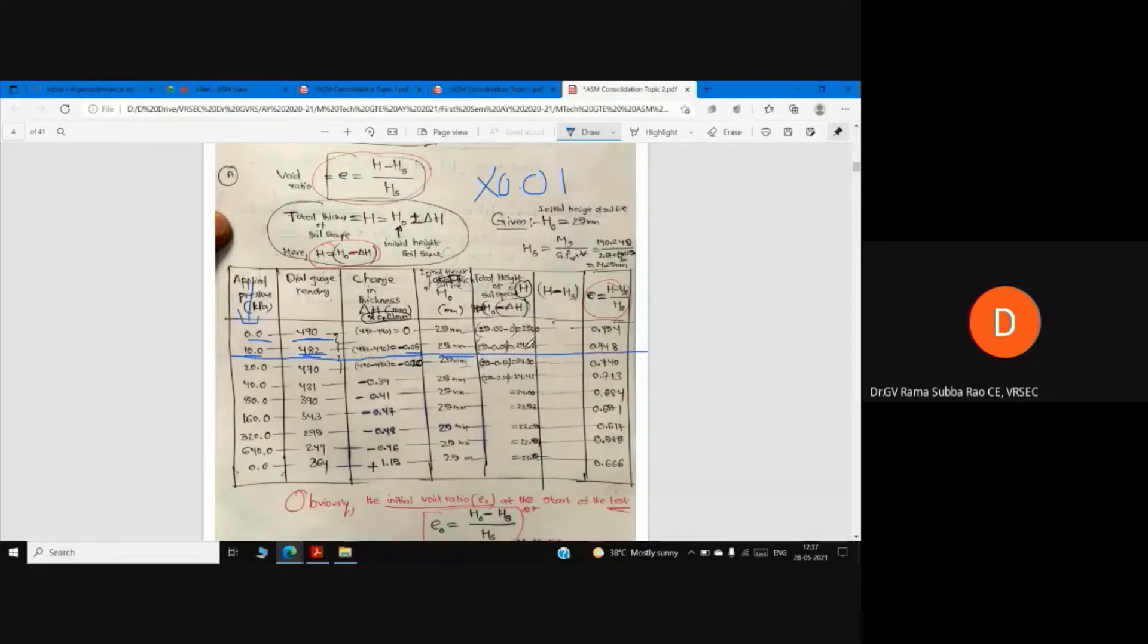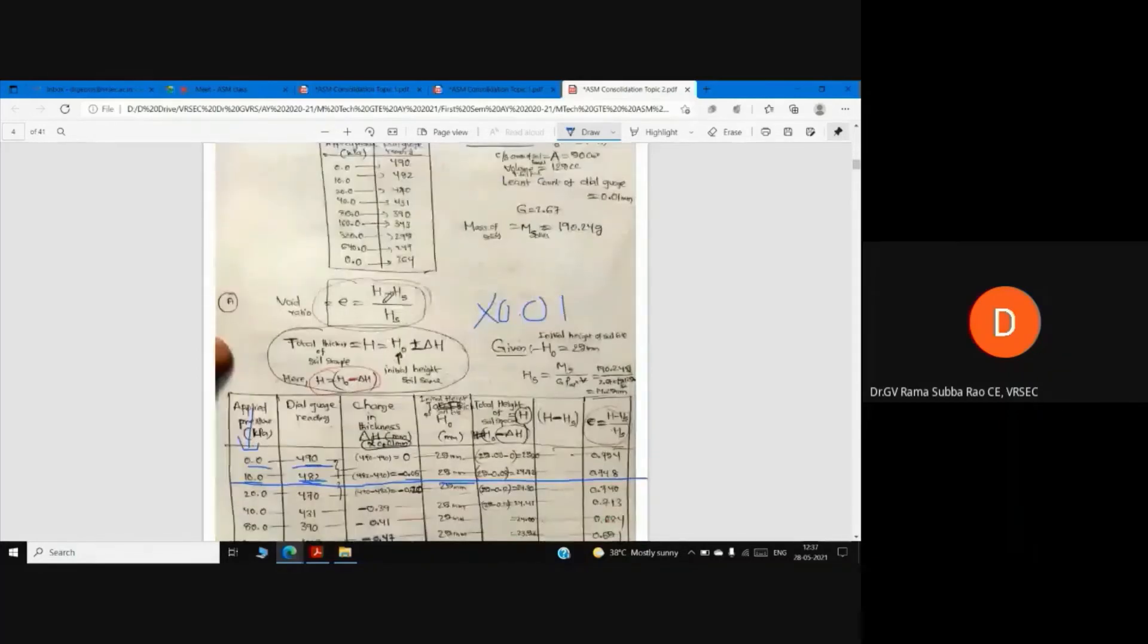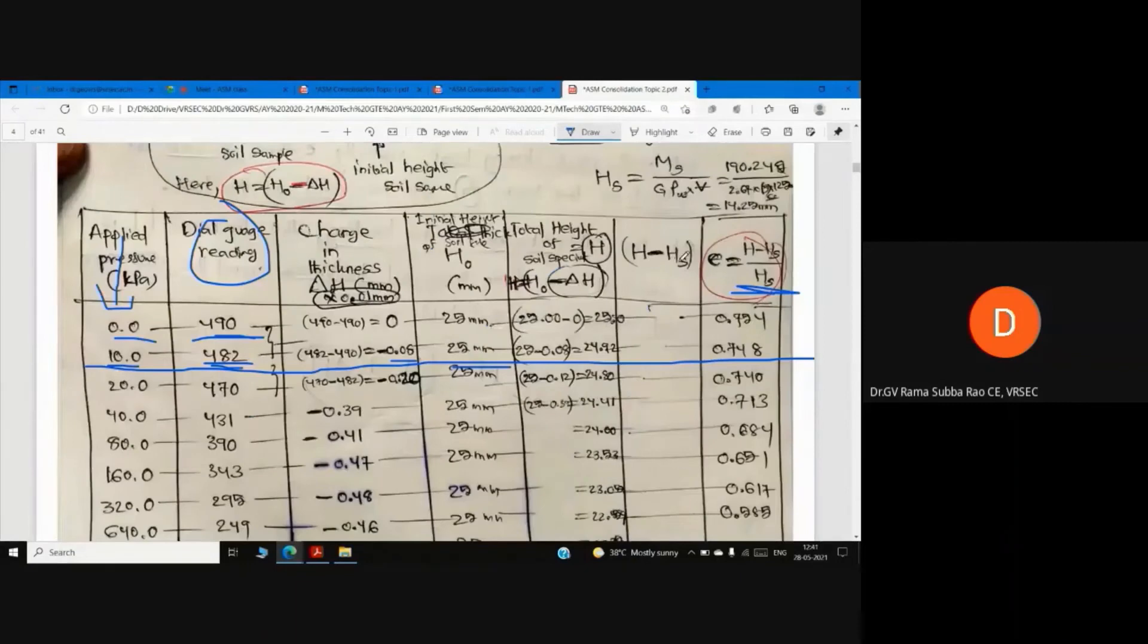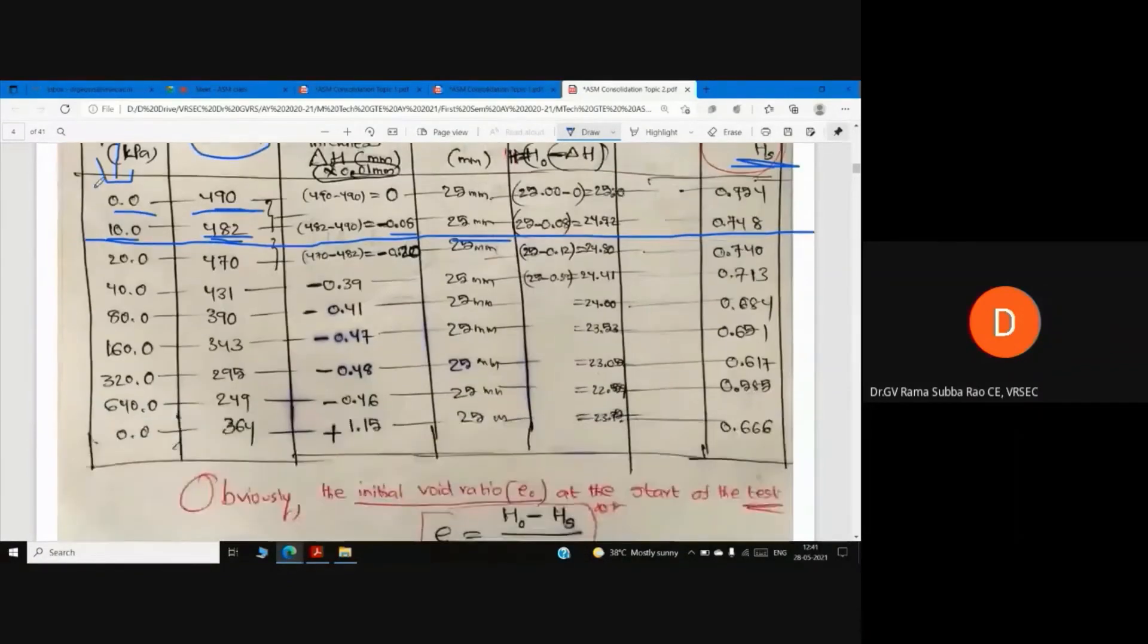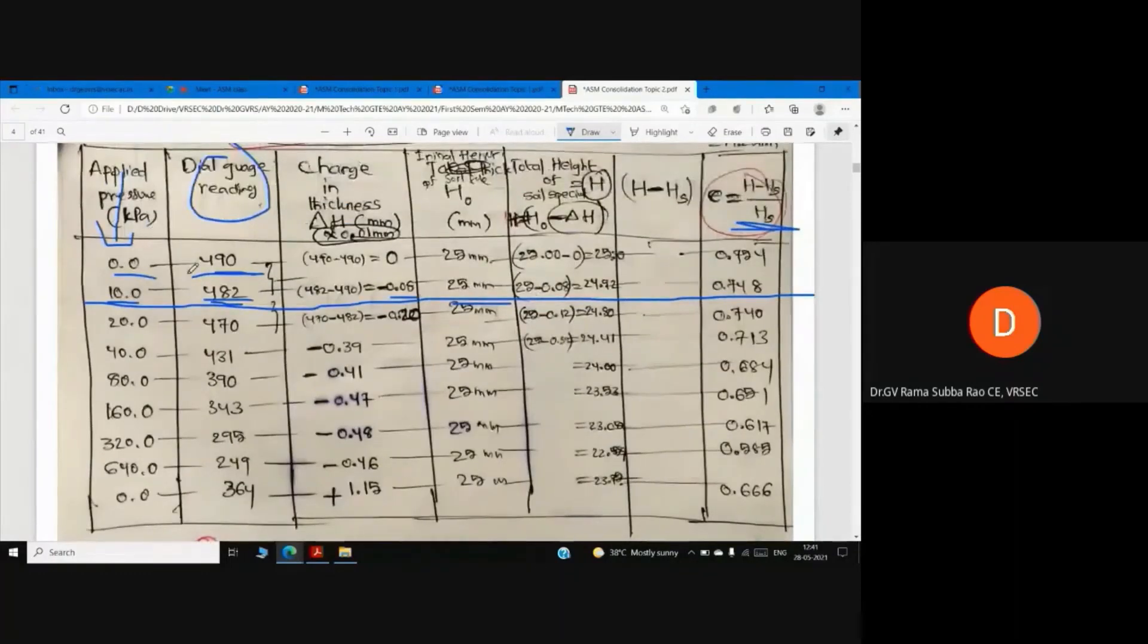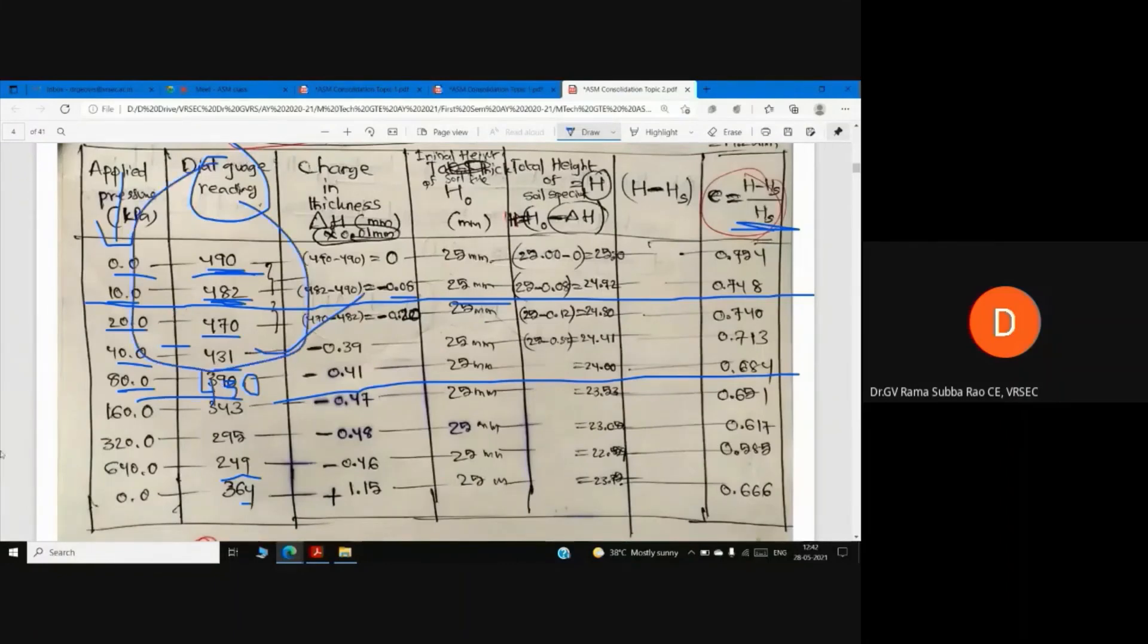Once we applied 10 kilopascals, thickness is 24.92mm. How to calculate void ratio: e is equal to H minus Hs by Hs. This is the height of solids method. Now how to calculate from the first reading.